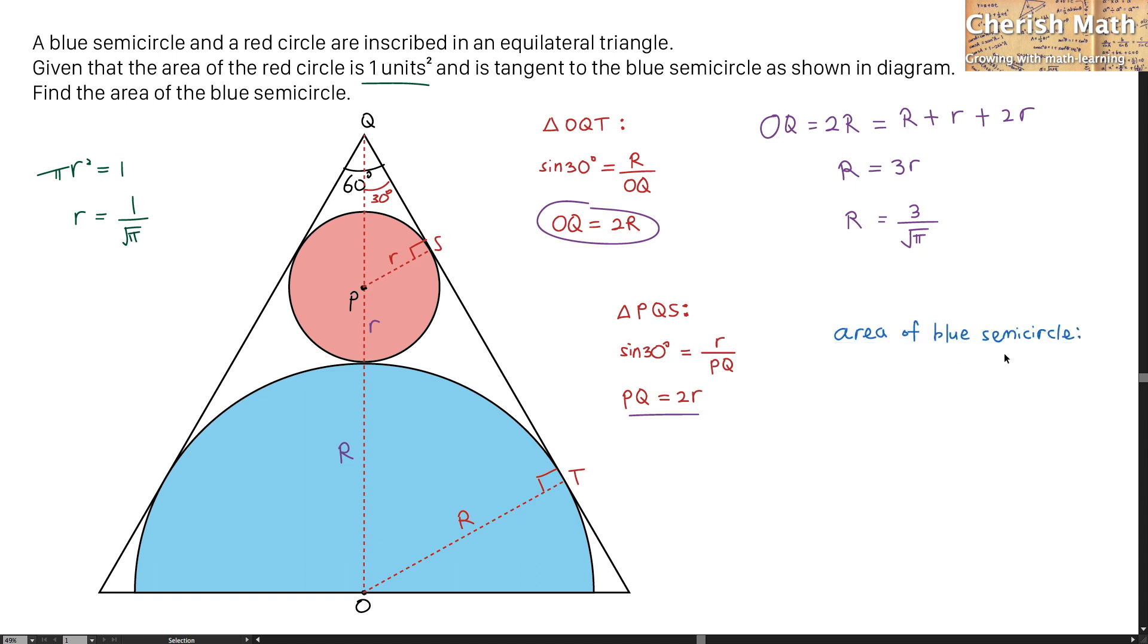To find the area of the blue semicircle, I'm going to use one-half multiplied by π times uppercase R squared. This is the value of uppercase R that I'm going to substitute and square. The value I'm getting is 4.5 units squared. I solved the puzzle. Thanks for watching and please subscribe.